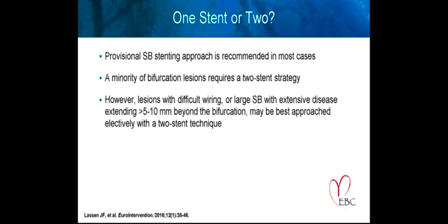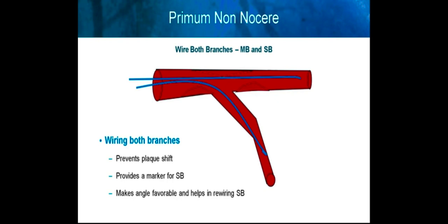What matters here is the amount of myocardium subtended by the branch vessel. If this branch vessel covers a large amount of myocardium and would be large enough to have stent placement performed safely, then a two-stent strategy may be considered. Irrespective of whether you perform a two-stent strategy or a provisional technique, it is important to wire both branches — the main branch and the side branch — through the concept of primum non nocere, first do no harm. Wiring both branches prevents plaque shift and provides a marker for the side branch.